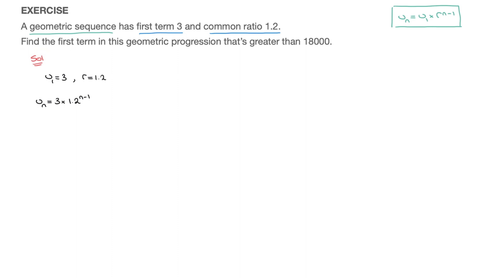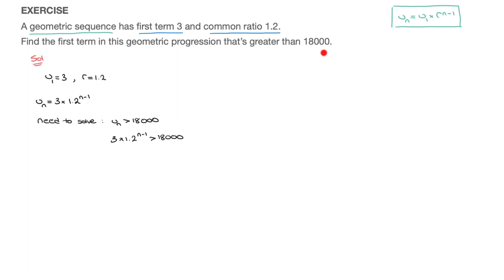We need to find the first term in this geometric progression that's greater than 18,000. Another way of saying that is we need to find the value of n for which 3 times 1.2 raised to the power of n minus 1 is greater than 18,000. In other words, we need to solve: U sub n greater than 18,000, which becomes 3 times 1.2 raised to the power of n minus 1 greater than 18,000.